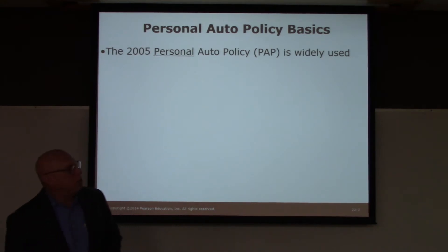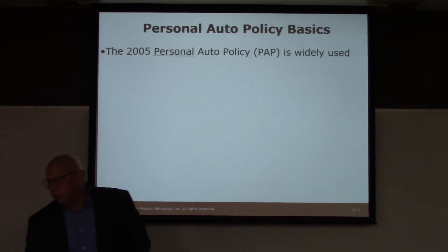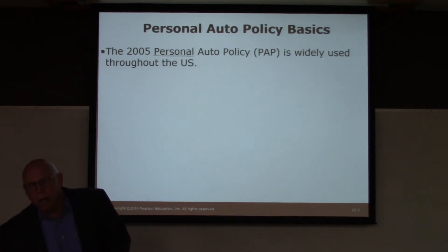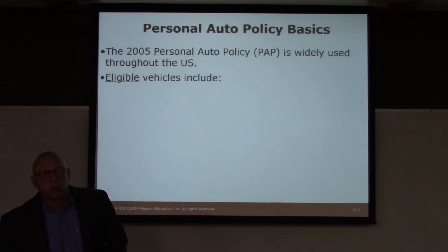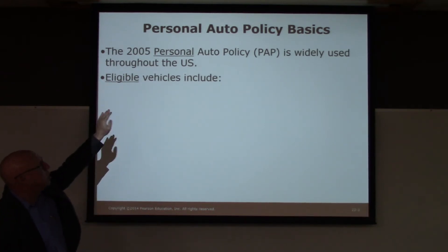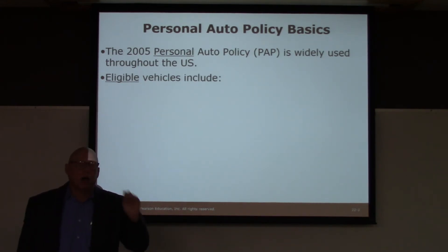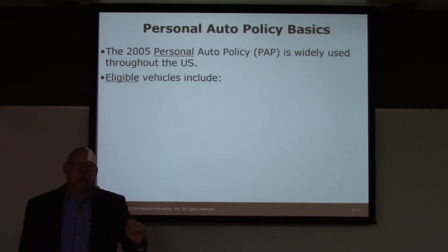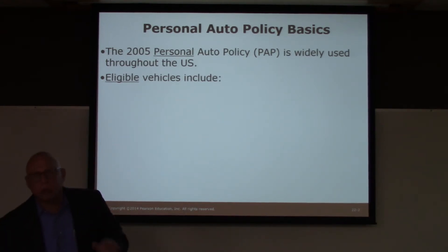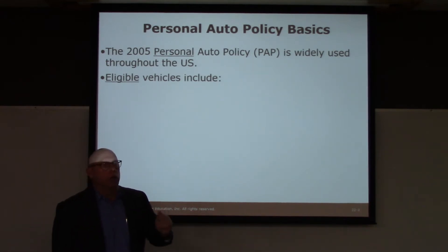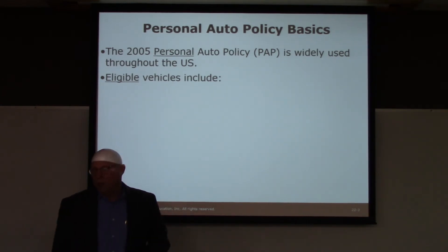Back in 2005, the Personal Auto Policy — the PAP — was created and is widely used throughout the United States, so policies are pretty standard throughout the U.S. The first question is: which vehicles are eligible to be insured? Note that I've highlighted the word 'personal' and underlined it. There is a big difference between a personal policy and a commercial or business policy. What we're talking about is a situation that involves an individual in their everyday activities using their everyday vehicles.